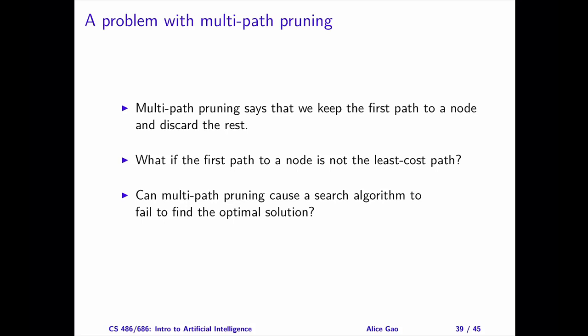So far, multipath pruning seems like a great idea. It can make a search algorithm more efficient by allowing it to explore fewer states and find a goal more quickly. Unfortunately, multipath pruning could cause a problem. Multipath pruning specifies that we should keep the first path found to any node and discard all other paths. What if the first path is not the one with the least cost? If this happens, multipath pruning could cause a search algorithm to discard the optimal solution.